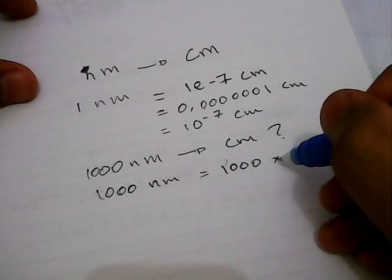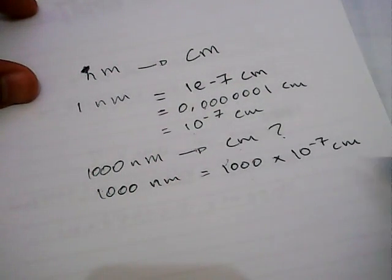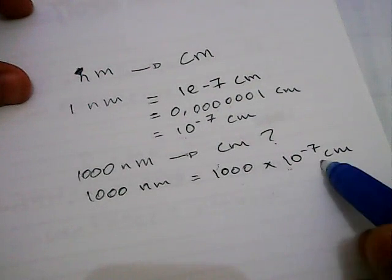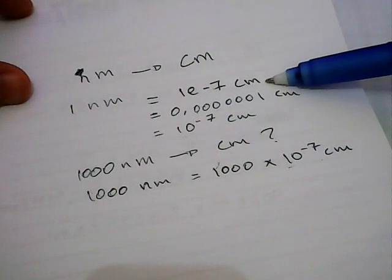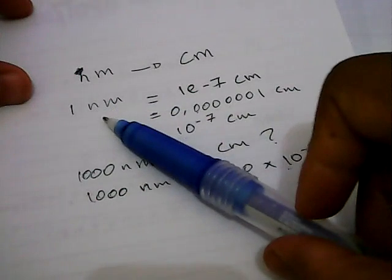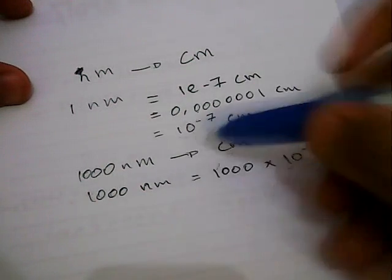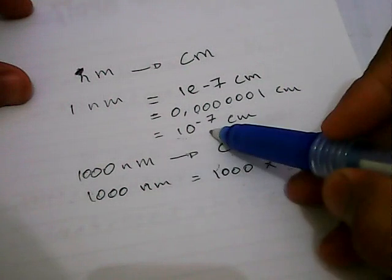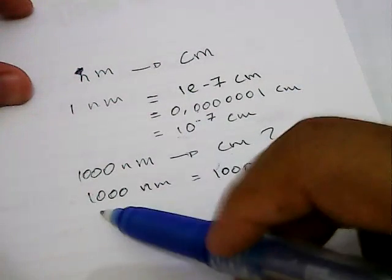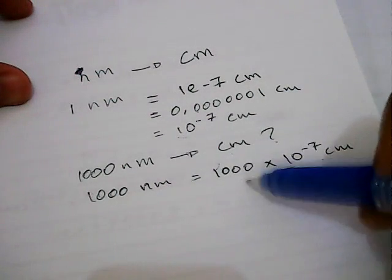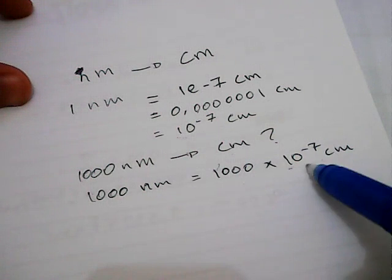Multiply with, how much is it? We need to multiply with 10 power minus 7 centimeter. Why do we need to multiply this number with this 1? It's all because we want to convert nanometers into centimeters. In this case, 1 nanometer is actually equal to 1 multiplied with this number. So as we do in this case, we need to do the same in this part of the example. We need to multiply this 1,000 with 10 power minus 7 centimeter.